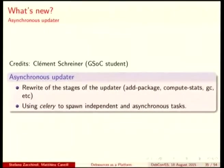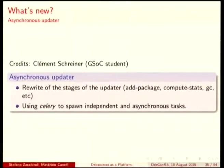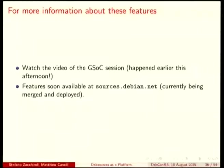Our second GSOC student, Clément Schreiner, worked on an asynchronous updater, because until now we had a synchronous updater. This needed a rewrite of all the stages of the updater — adding packages, computing stats, garbage collection, just as examples. We're using the Celery Python package to actually spawn independent and asynchronous tasks. If you want to get more information about these features, they presented it in the GSOC session this afternoon and you can see the video. They will be available on sources.debian.net very soon — we are merging them currently.